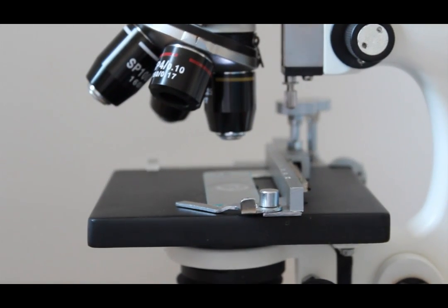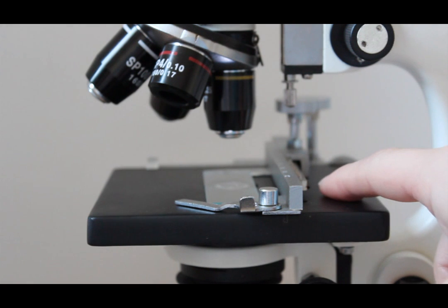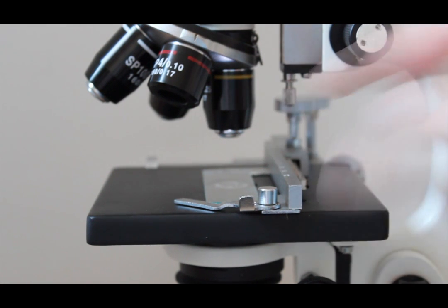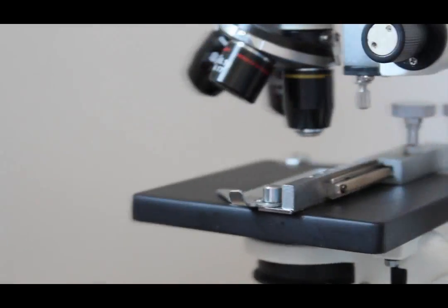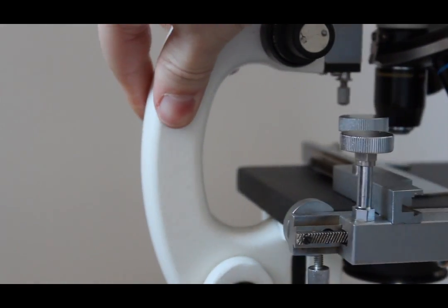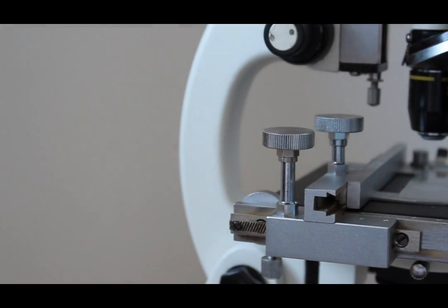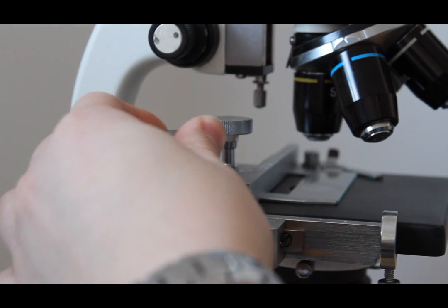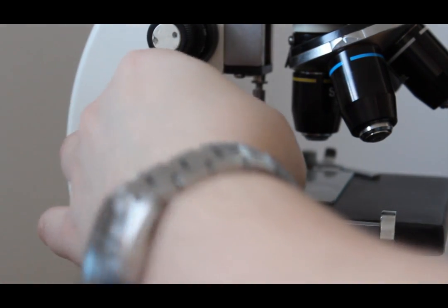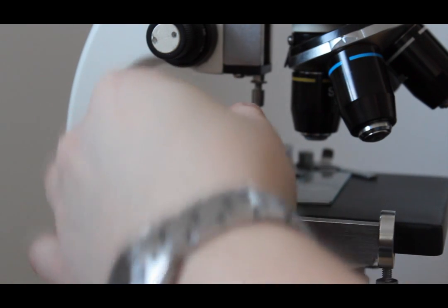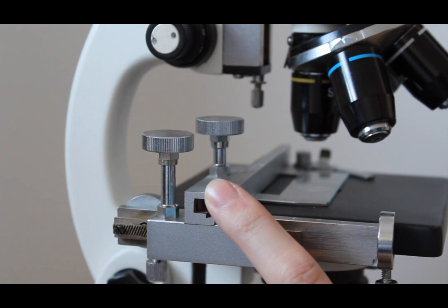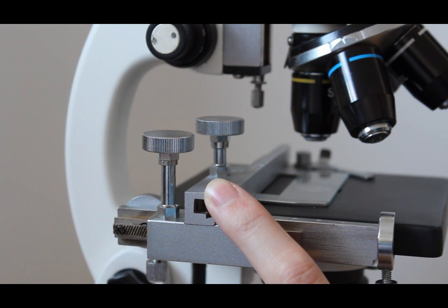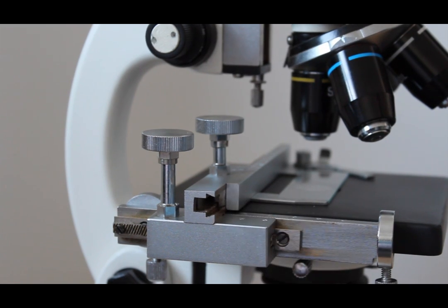The next thing I want to look at is the actual stage. So this whole thing is basically called the stage. This is where your slide or the specimen you want to look at is going to go. So on the stage you're going to have, I'll show you, your Y and your X axis here. So you can move it around and see exactly what you want to see and where you want to see it. This here is basically just part of the mechanical stage.